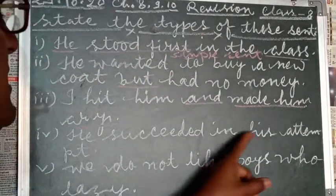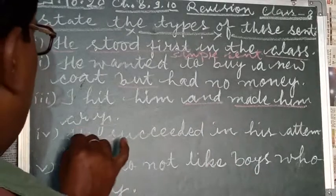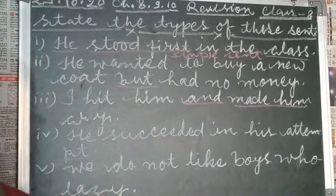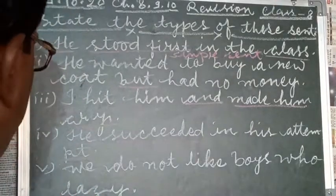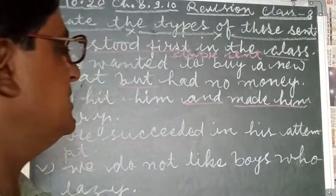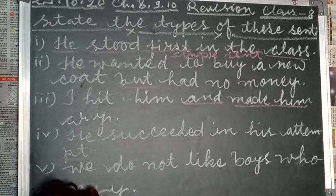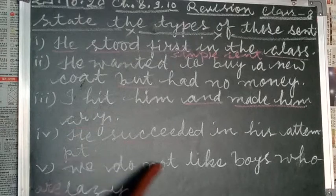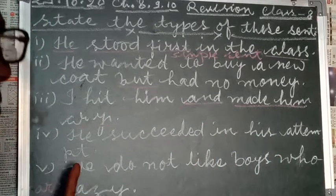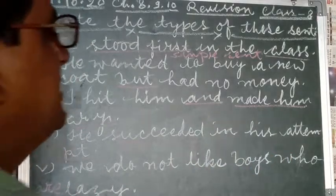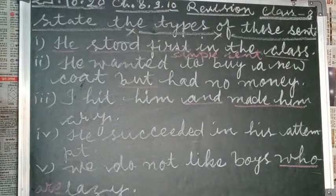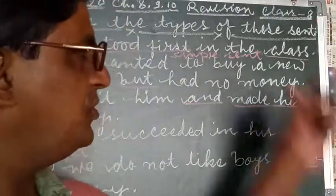In number four, 'he succeeded in his attempt' — one subject, one verb, one object, so that is a simple sentence. Number five: we do not like boys who are lazy. Looking at it, 'we do not like boys' is one main clause, and 'who are lazy' is a subordinate clause, with 'who' as the subordinate conjunction. So in this way we combine these sentences. I hope you have confirmed this and you should revise this chapter properly.